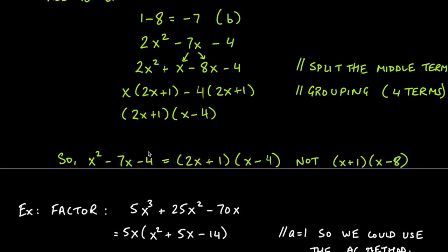Our answer is 2x² - 7x - 4 factored as (2x + 1)(x - 4). Note: earlier I mistakenly wrote x² instead of 2x² — the original problem was 2x² - 7x - 4, so there should be a 2 there. So 2x² - 7x - 4 factors to (2x + 1)(x - 4).